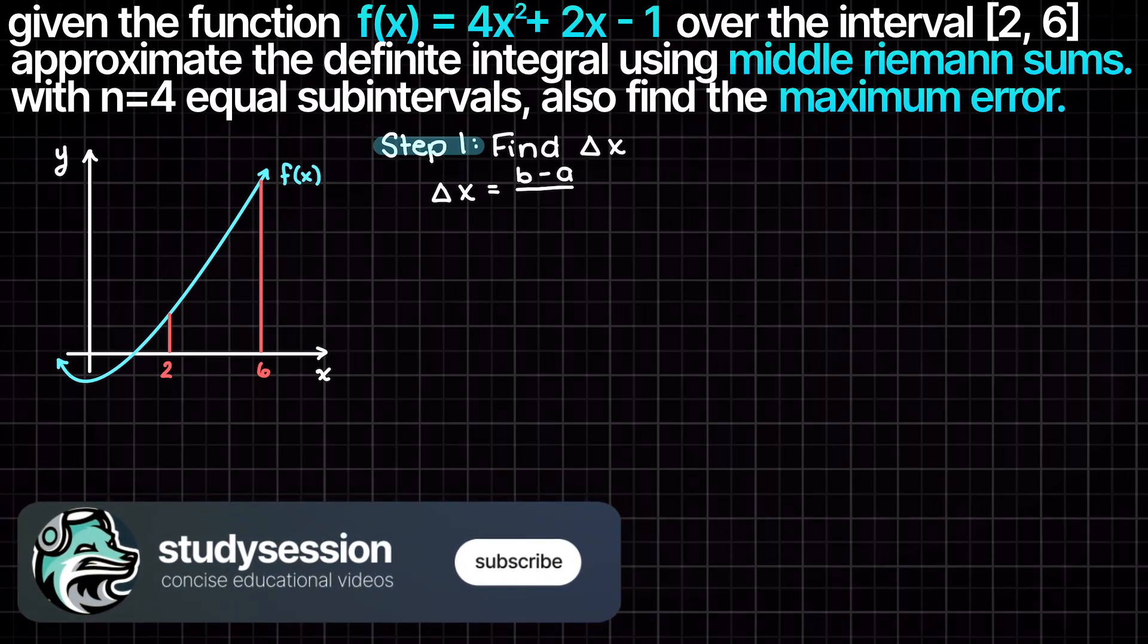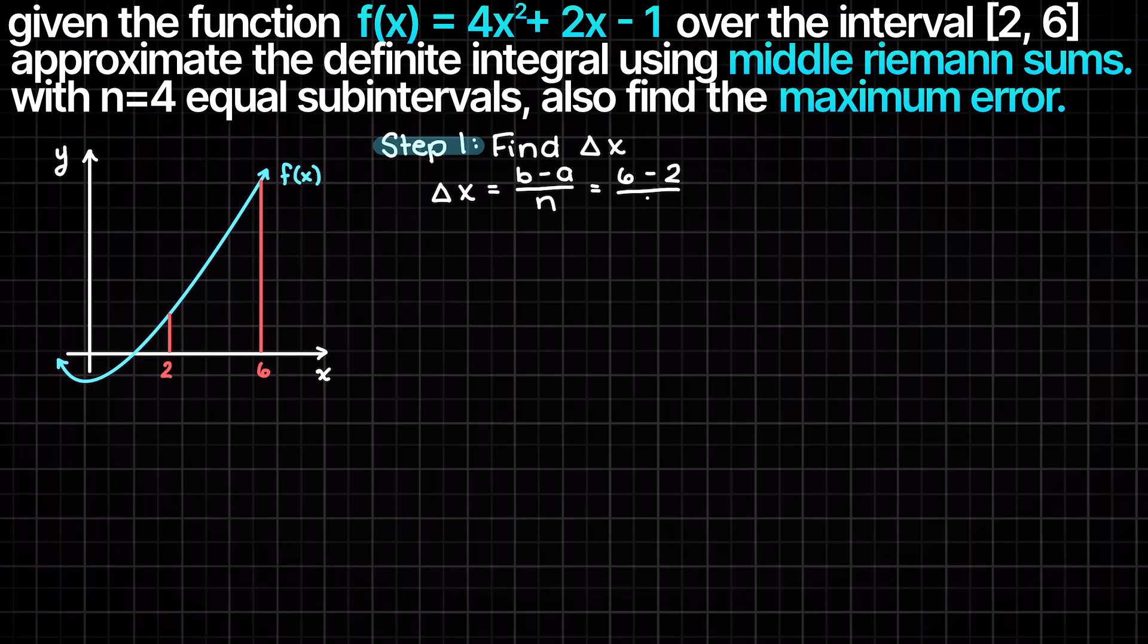b minus a which gives us the length of the x values over which we are evaluating, then we divide by our number of subintervals, and that gives us 1.